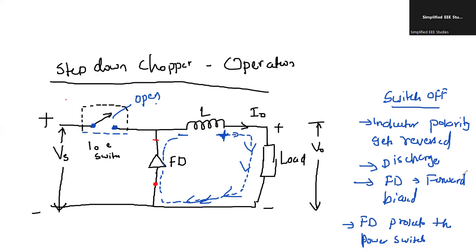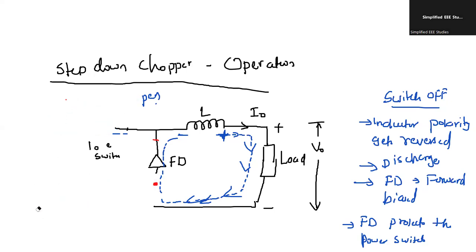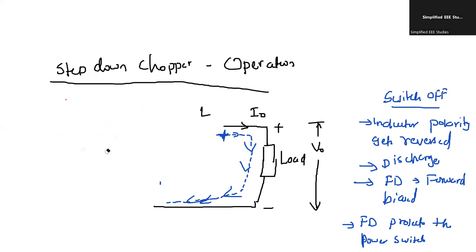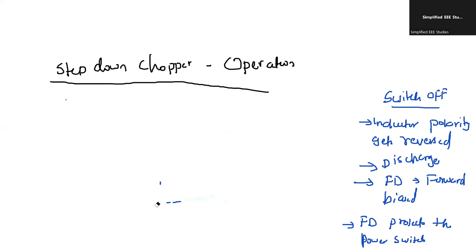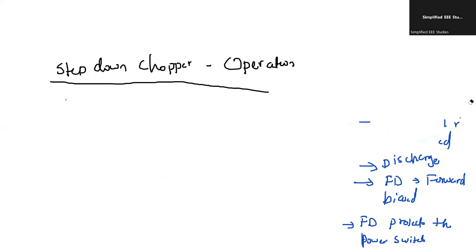Let us discuss how the voltage is getting reduced. With the help of waveforms, I can explain very clearly. Please make a note of this. During the on time, what is going to happen — during the off period, what will happen for the buck converter, for the step-down chopper. It is pretty interesting.